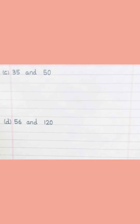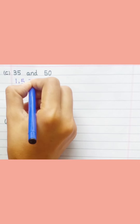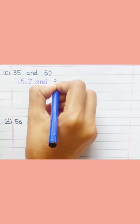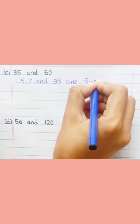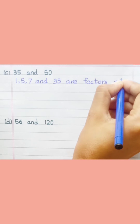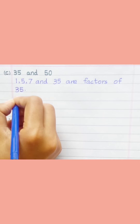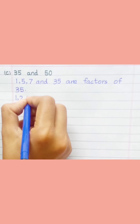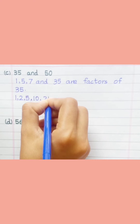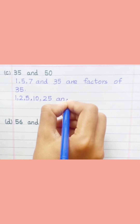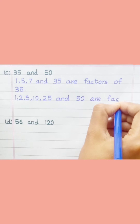Part C: 35 and 50. 1, 5, 7, and 35 are factors of 35. 1, 2, 5, 10, 25, and 50 are factors of 50.